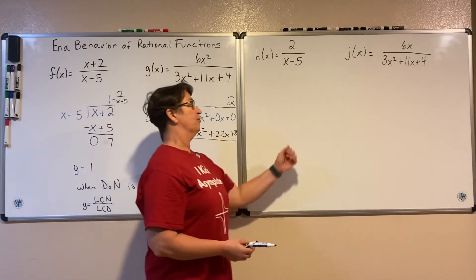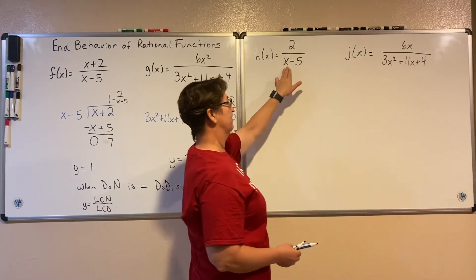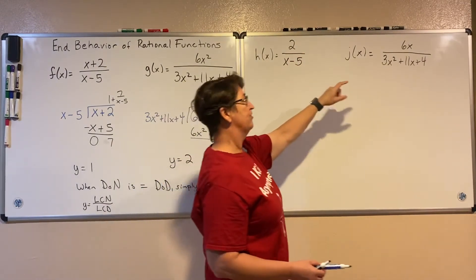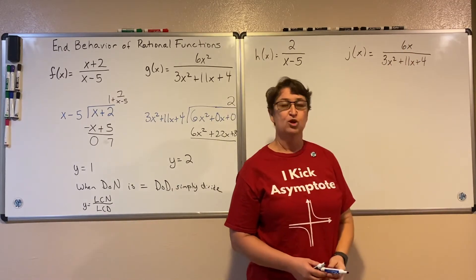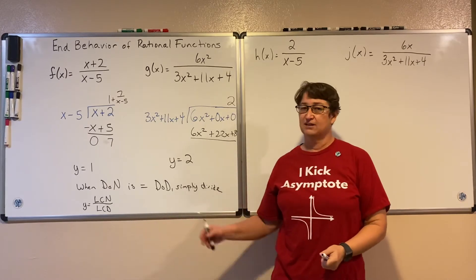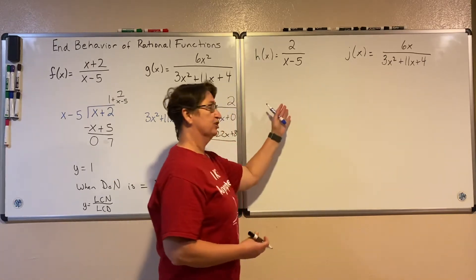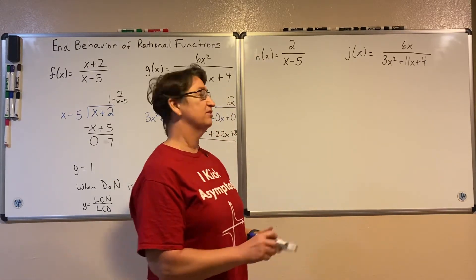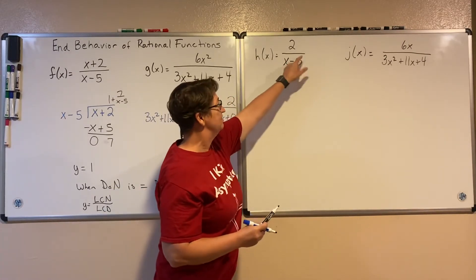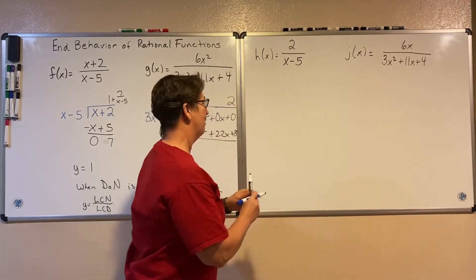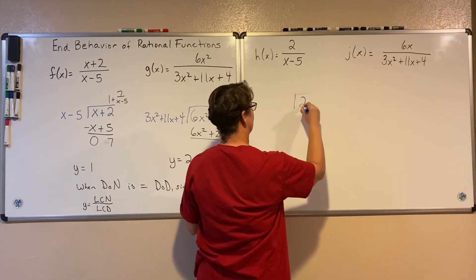Let's look at this example. Here, my degree on top is not the same as the degree on bottom. And in this example, my degree on top is not the same as my degree on bottom. So I can't just say the leading coefficient of the numerator divided by the leading coefficient of the denominator. I am again simply dividing — that's all this means: we take our top and divide by the bottom, and it will tell us about what's happening on the end behavior.